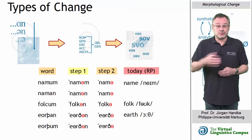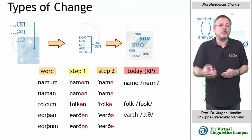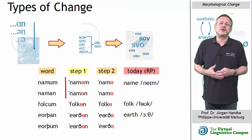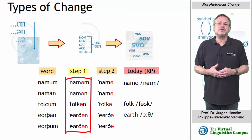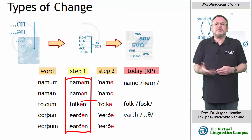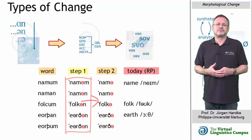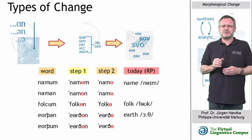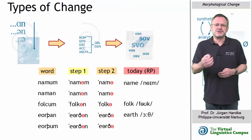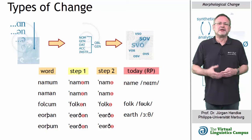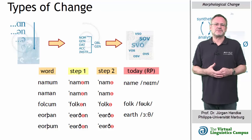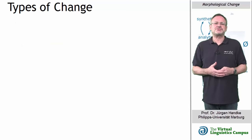In Old English, root syllables were heavily stressed and all other syllables were weakened. As a result, final vowels were first weakened — that is, they were realized as schwa — and final nasals were lost. Even though the structural details of morphological change are language-specific, generalizations can be made that reflect the patterns of morphological processes.